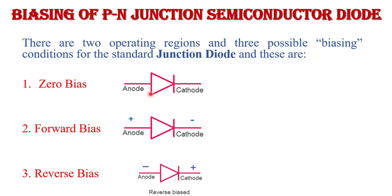In case of zero bias, there is no external DC voltage applied across the terminals, so there is no current flow across the device. In forward bias, the anode terminal is connected to the positive terminal of the battery and the cathode is connected to the negative terminal — meaning anode is positive and cathode is negative.